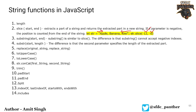Then we have substring, which is similar to slice, but the difference is that it cannot accept negative indexes — it will always have a positive index. Then we have substr, where you provide the start index and the length parameter, which defines the length of the substring that will be returned. We will see the demo as well.